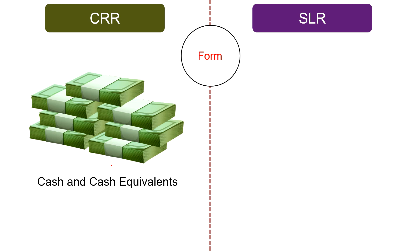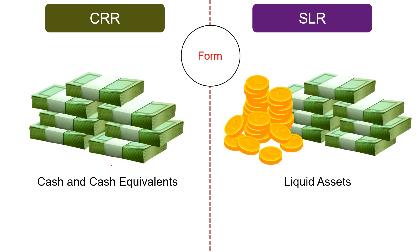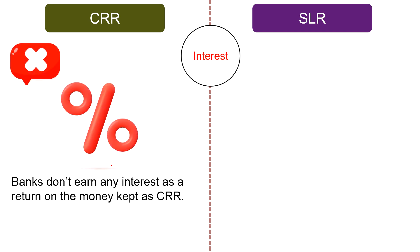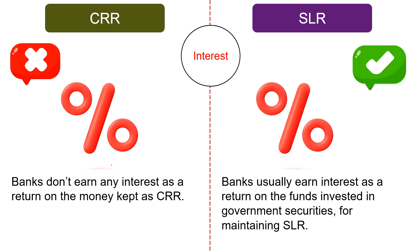In terms of form, Cash Reserve Ratio involves maintenance of reserves in the form of cash and cash equivalents, whereas Statutory Liquidity Ratio requires maintenance of reserves as liquid assets i.e. cash, gold, and investment in government bonds, bills and securities. Further, banks do not earn any interest as a return on CRR money. However, banks usually earn interest as a return on funds invested in government securities for maintaining SLR.